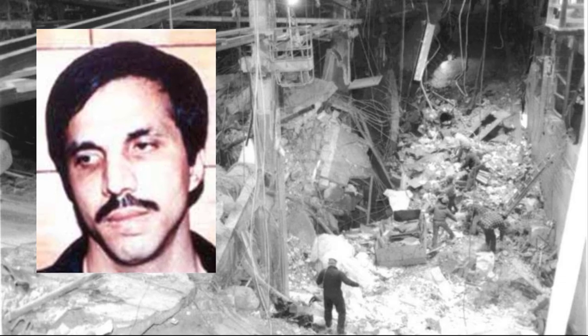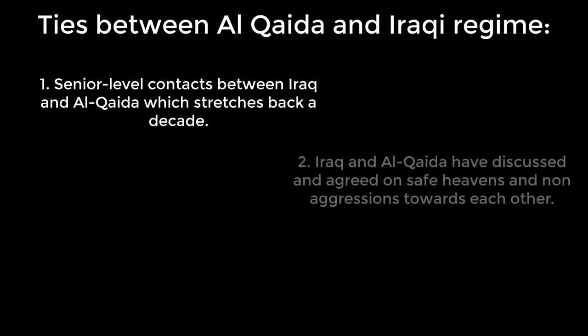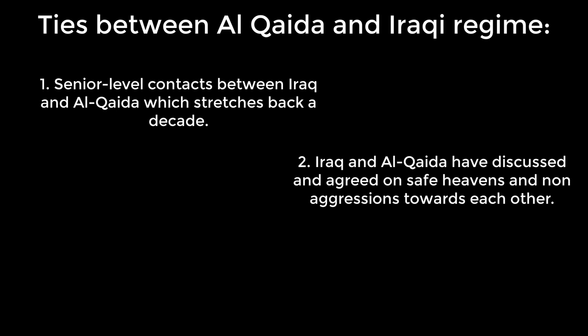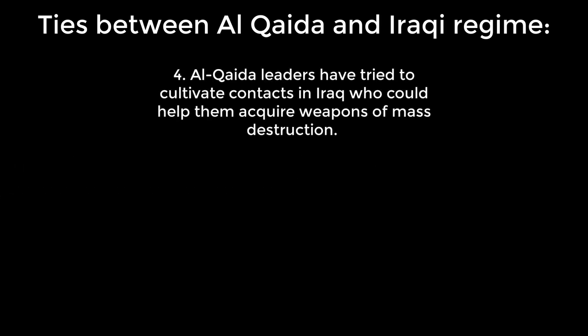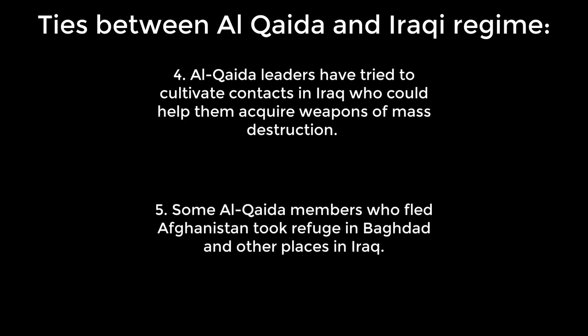Abdul Rahman Yasin was actually directly responsible for the World Trade Center bombings in 1993. The following ties between Iraq and Al-Qaeda were presented by CIA director George Tenet in 2002: senior-level contacts between Iraq and Al-Qaeda stretching back a decade; Iraq and Al-Qaeda discussing and agreeing on safe havens and non-aggression; Iraq providing training to Al-Qaeda members in chemical weapons and conventional explosives; and Al-Qaeda leaders attempting to acquire weapons of mass destruction through Iraqi contacts.